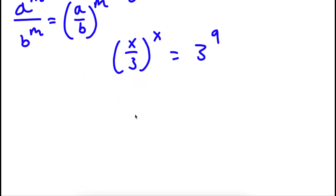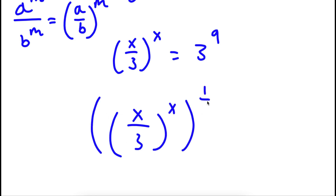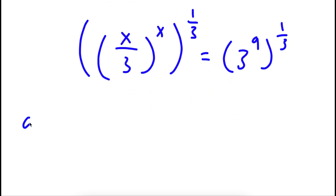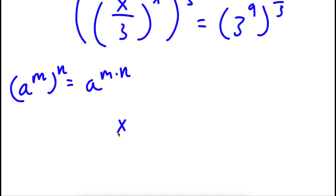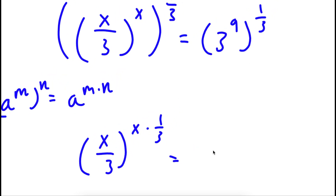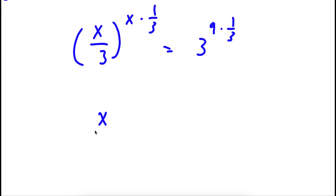Now I'm going to take the power of 1 third on both sides. So I have x over 3 to the power of x to the power of 1 over 3, equal to 3 to the power of 9 to the power of 1 over 3. Using the rule a to the power of m to the power of n equals a to the power of m times n, this becomes x over 3 to the power of x times 1 over 3, equal to 3 to the power of 9 times 1 over 3. Since x times 1 over 3 is x over 3, I have x over 3 to the power of x over 3 equals 3 to the power of 3, which is simply 3.